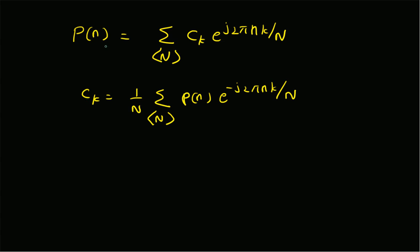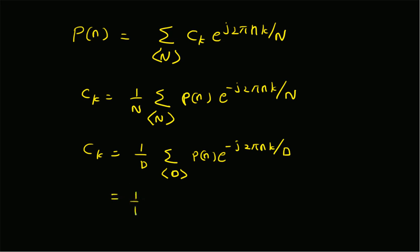For the given p of n with period equal to d, c_k equals 1 over d, times the summation over an interval of length d of p of n times e to the power minus j 2 pi n k over capital d. Now for n equal to 0, p of 0 is 1 and e to the power 0 is 1. For n equal to 1 through d minus 1, p of n is 0, so all subsequent terms in the summation are 0.